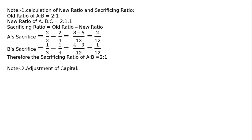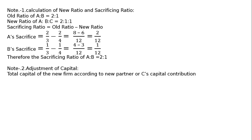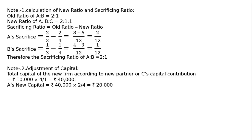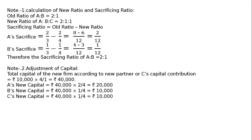Note 2: Adjustment of capital. Total capital of the new firm according to new partner C's capital contribution: C contributes Rs.10,000 for 1/4 share, so total = Rs.10,000 × 4/1 = Rs.40,000. This will be distributed among A, B, and C in the ratio 2:1:1, giving A = Rs.20,000, B = Rs.10,000, C = Rs.10,000.